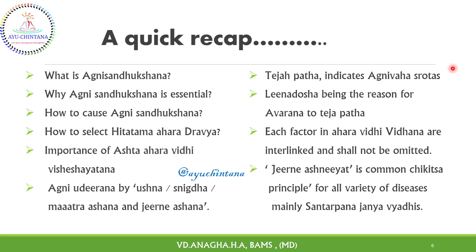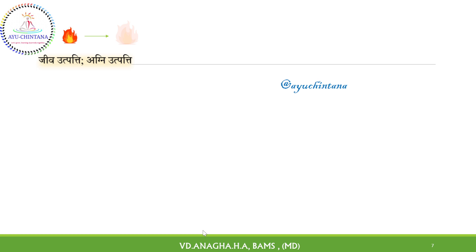Tejavpatha indicates the Agni Vahasrothis, and this was one important discovery. Lina Dosha is the reason for Avarana to Tejavpatha. Each factor in Ahara Vidhividhana is interlinked and shall not be omitted. Hence, Jirne Ashniyat is the common Chikitsa principle for all variety of diseases, mainly Santarpanajanya Vyadhis. With Jiva Utpatti, Agni Utpatti occurs.